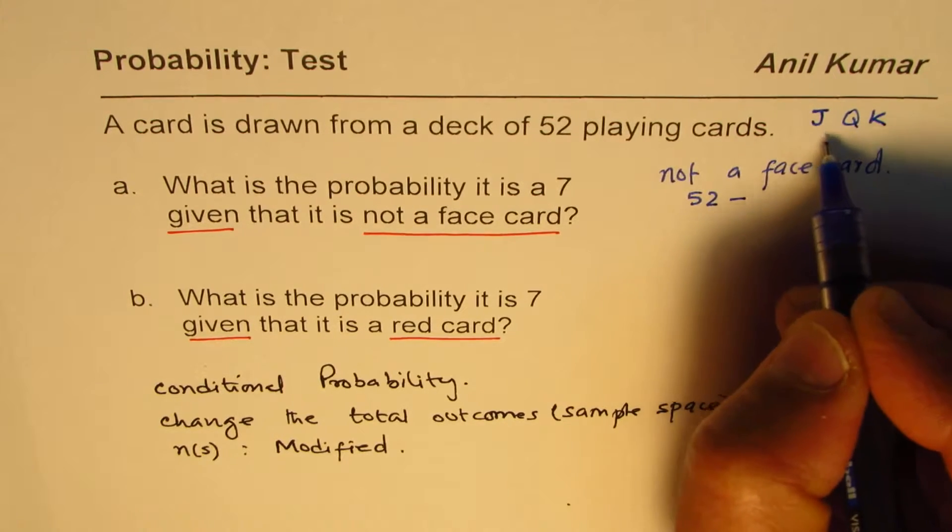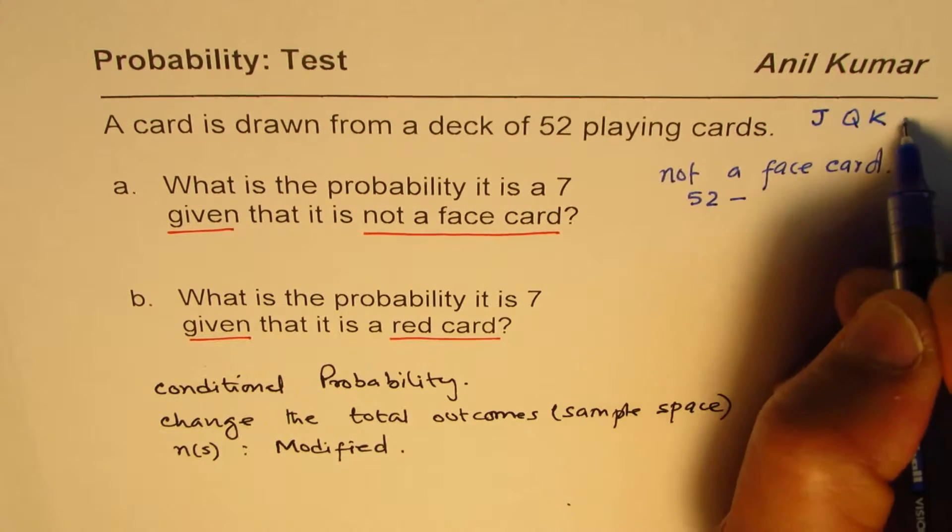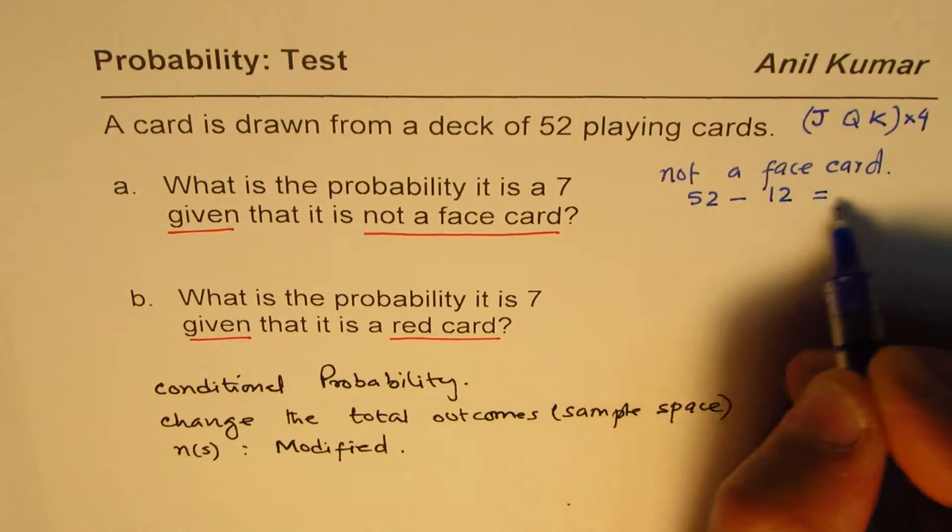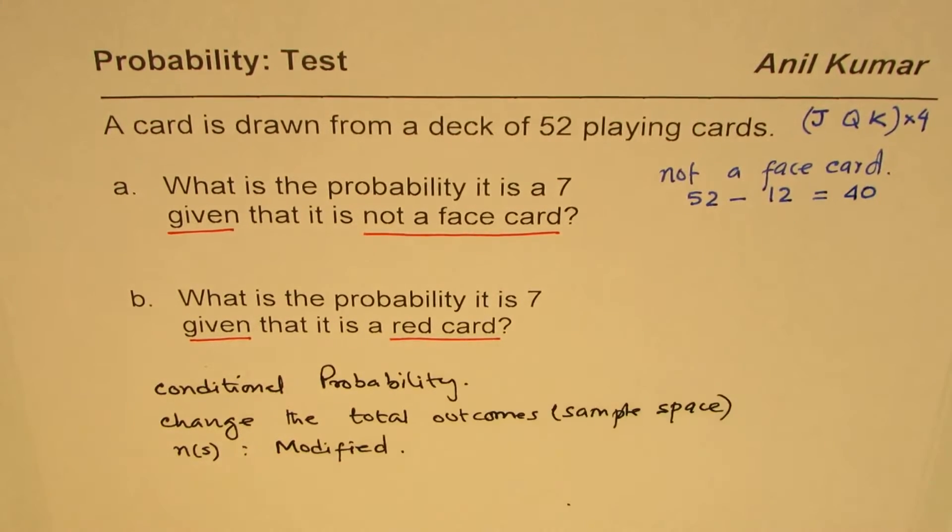Face cards are jack, queen, and king, and all are of four types, so three times four suits equals 12. So we have to take away these 12 cards.